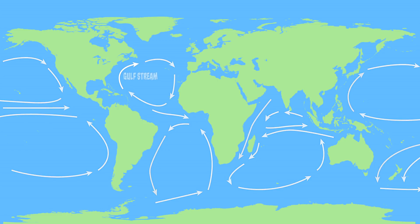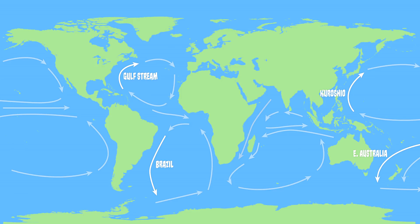These intensified western boundary currents are found in the five major ocean gyres. They are the Gulf Stream in the North Atlantic, the Brazil Current in the South Atlantic, the Corocio Current in the North Pacific, the East Australian Current in the South Pacific, and the Agulhas in the Indian Ocean. These currents are important factors in climate because they carry warm water towards the poles. The Gulf Stream, for example, is responsible for bringing warm water and heat to Europe, resulting in the warmer climate that Europe experiences compared to similar latitudes.